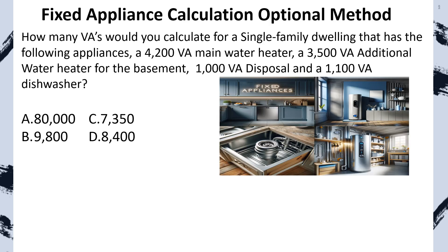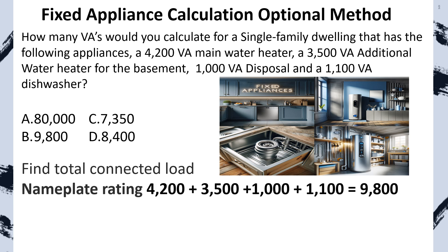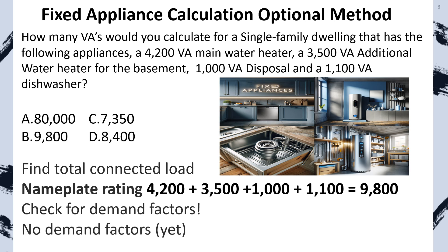How many VAs would you calculate for a single family dwelling with the following appliances: a 4,200 VA main water heater, a 3,500 VA additional water heater for the basement, a 1,000 VA disposal, and a 1,100 VA dishwasher? First, find the total connected load. With the optional method we take the nameplate rating of all these appliances. There are no demand factors yet at this portion of the calculation — all we do is total up all these appliances, then we'll apply one general demand factor in just a little bit. The answer is B.